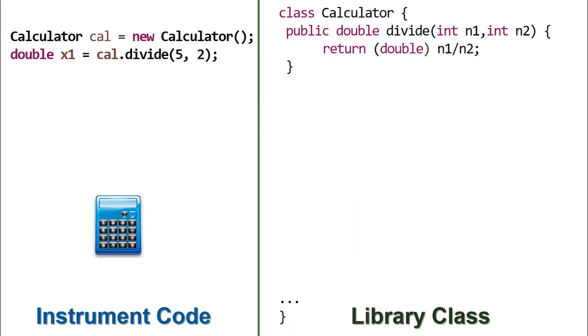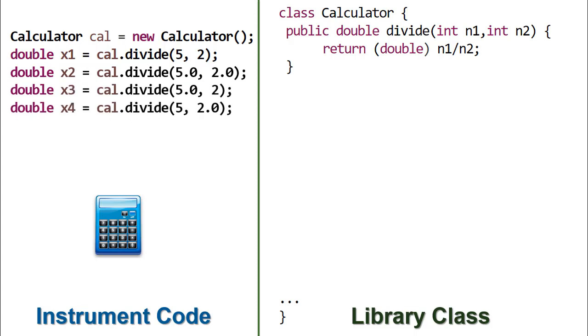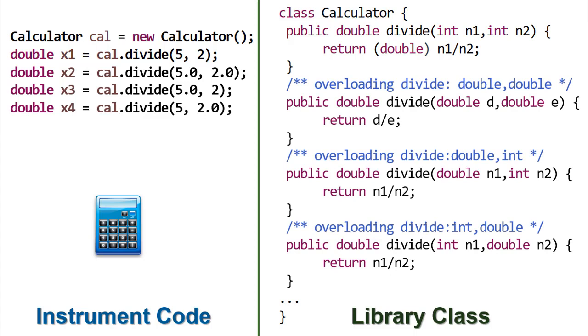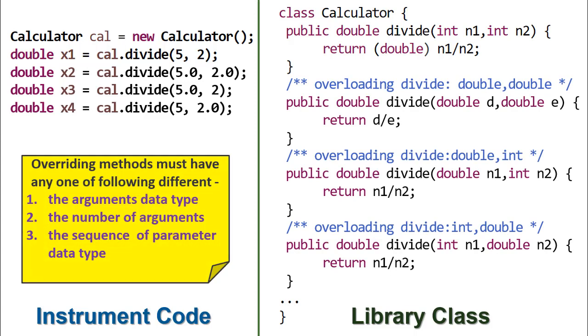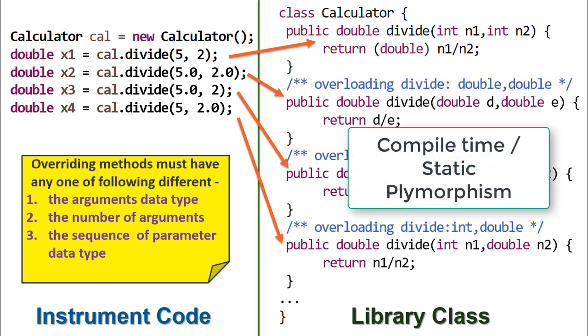They will expect that the call to the same method should take care of the background complexity. In such scenario, object oriented programming language like Java allows the programmer to create various methods with same name provided they have different argument type or different number of arguments or their sequence. This is called method overloading. Important point to note here is that the mapping of caller method to the calling method is done at compile time itself. Hence, this type of polymorphism is known as compile time or static polymorphism.